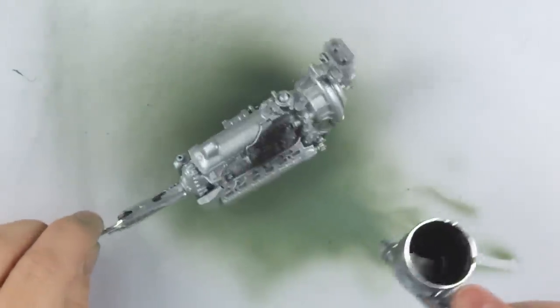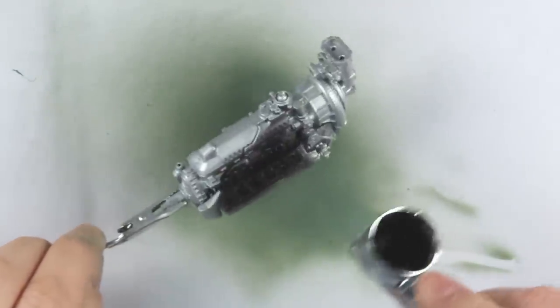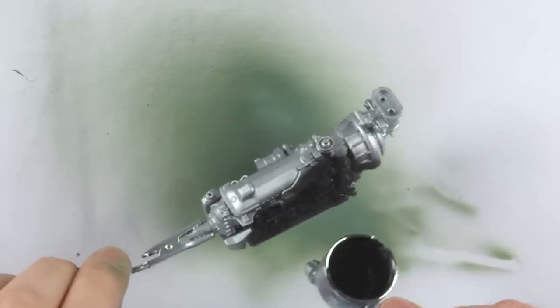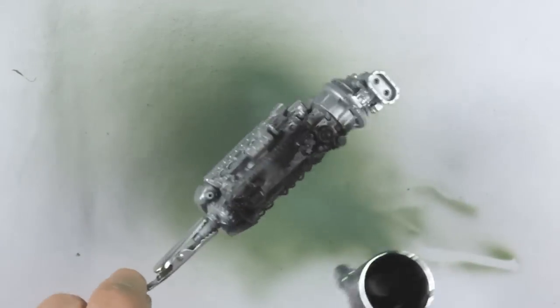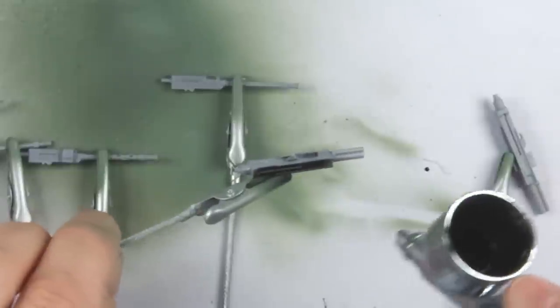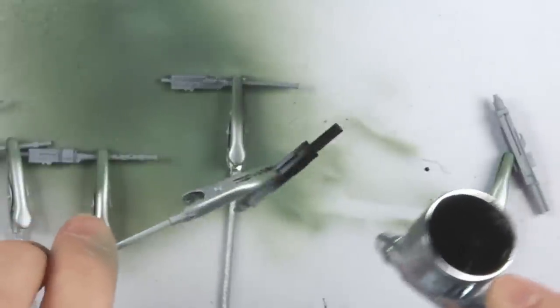The engine I'm going over with matte black. I'll seal it with Pledge to give a semi-gloss appearance after I'm done paint chipping. Whilst I have black in the airbrush, I'm also giving the machine guns and cannons their undercoat too.